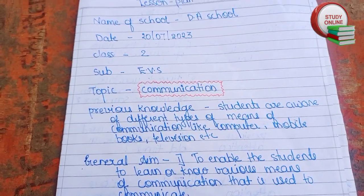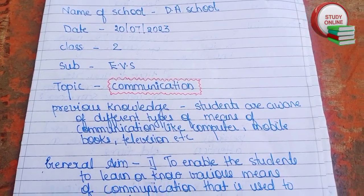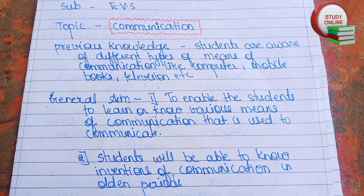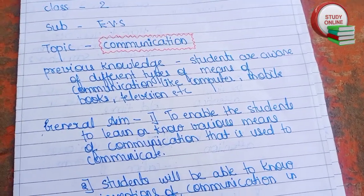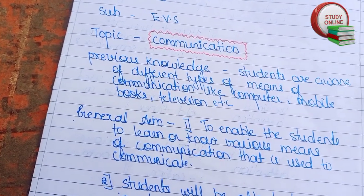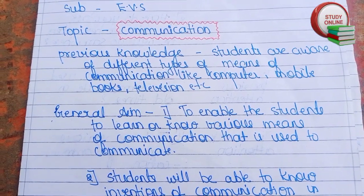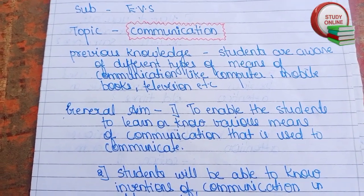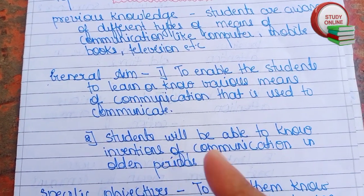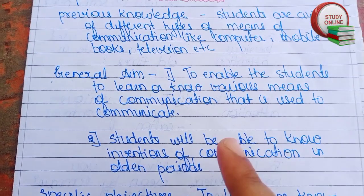Here you can see the format for class 2. For previous knowledge, we write what students are already aware of. Students are already aware of many means of communication they use — in today's generation they basically use mobile and computer, so they know about that. For general objectives, we write whatever we want to teach students.